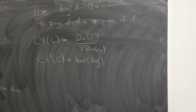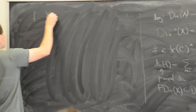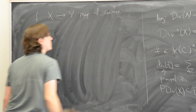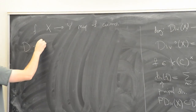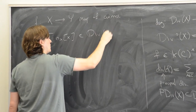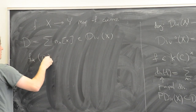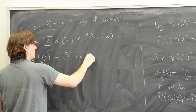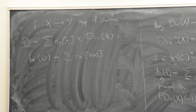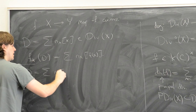Divisors have functoriality in each direction. Suppose we have a map of curves f from X to Y. If we have a divisor on X, you can push it forward to a divisor on Y. The pushforward f_* of D is defined as the sum of n_x applied to f(x). And if you have a divisor on Y, written as the sum of n_y times y over the points of Y, there's a pullback divisor on X.